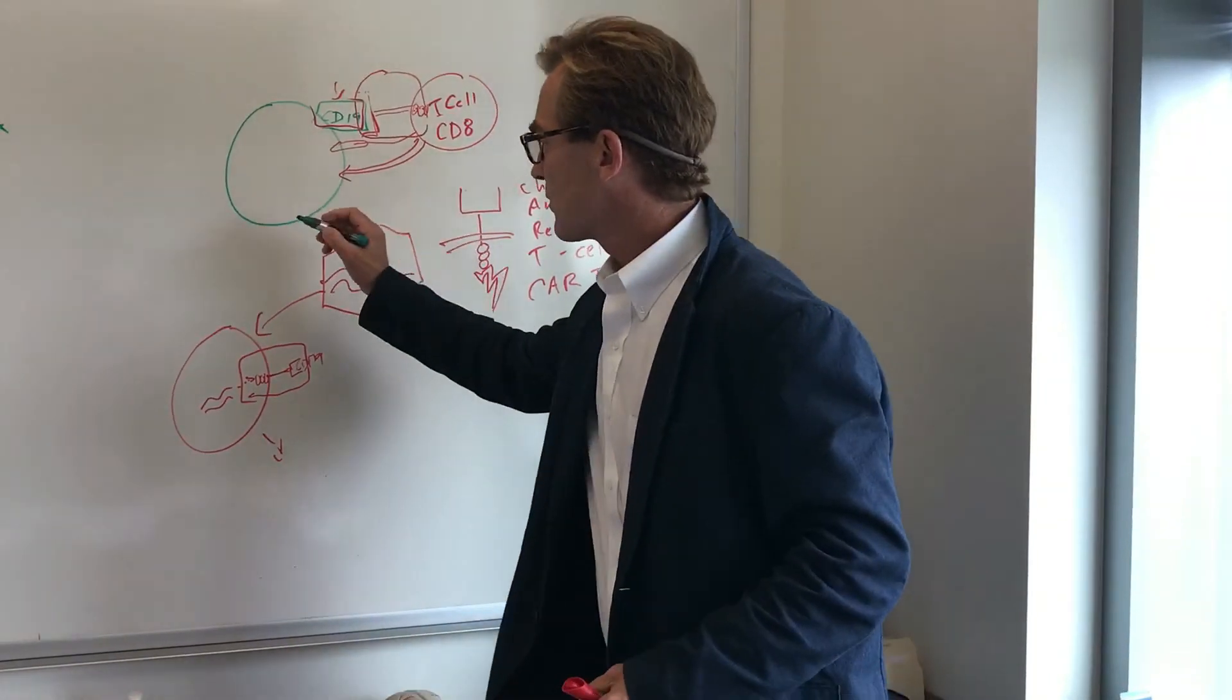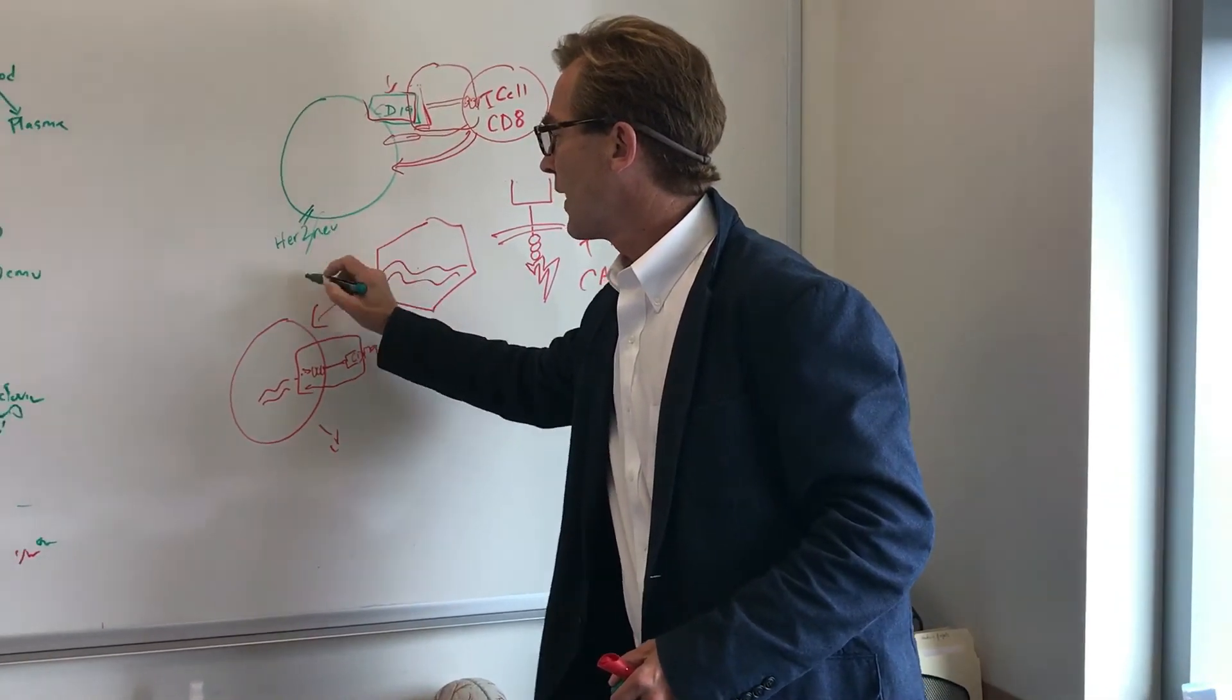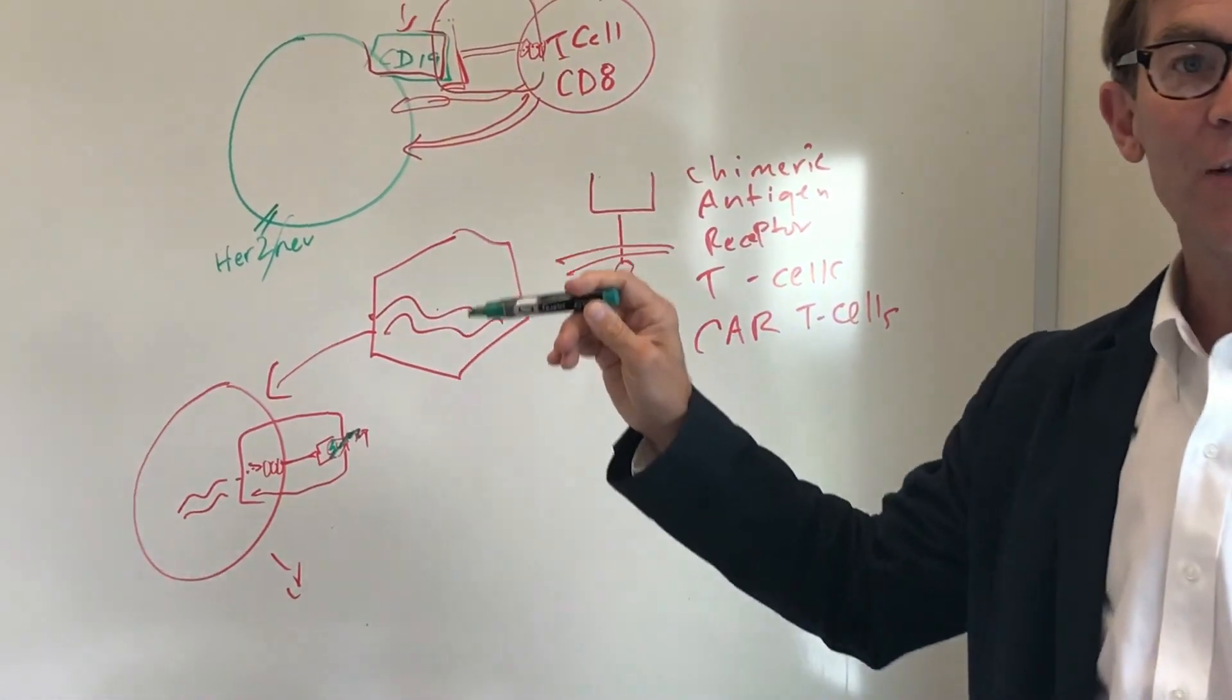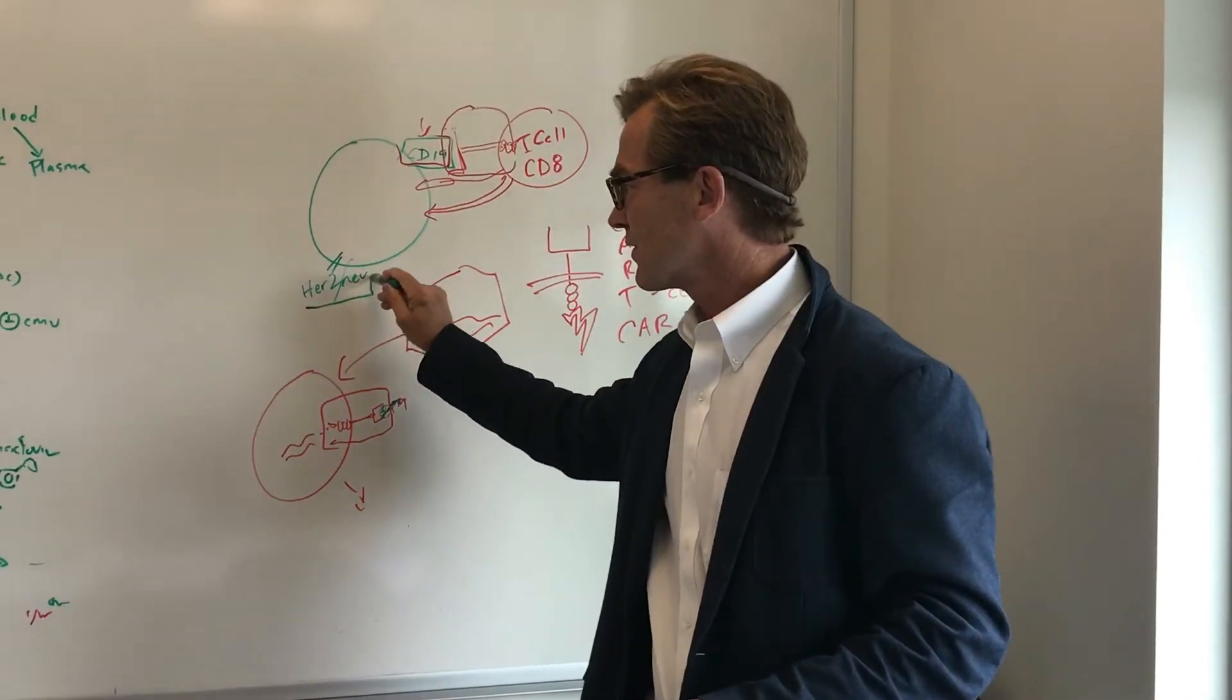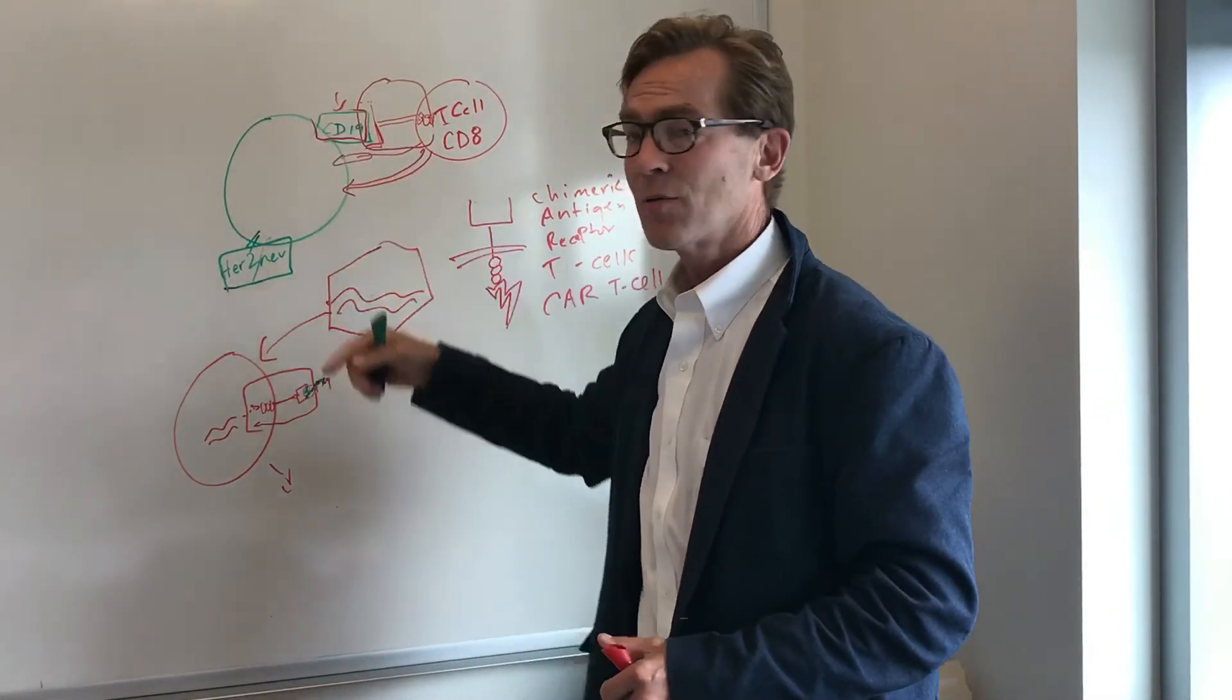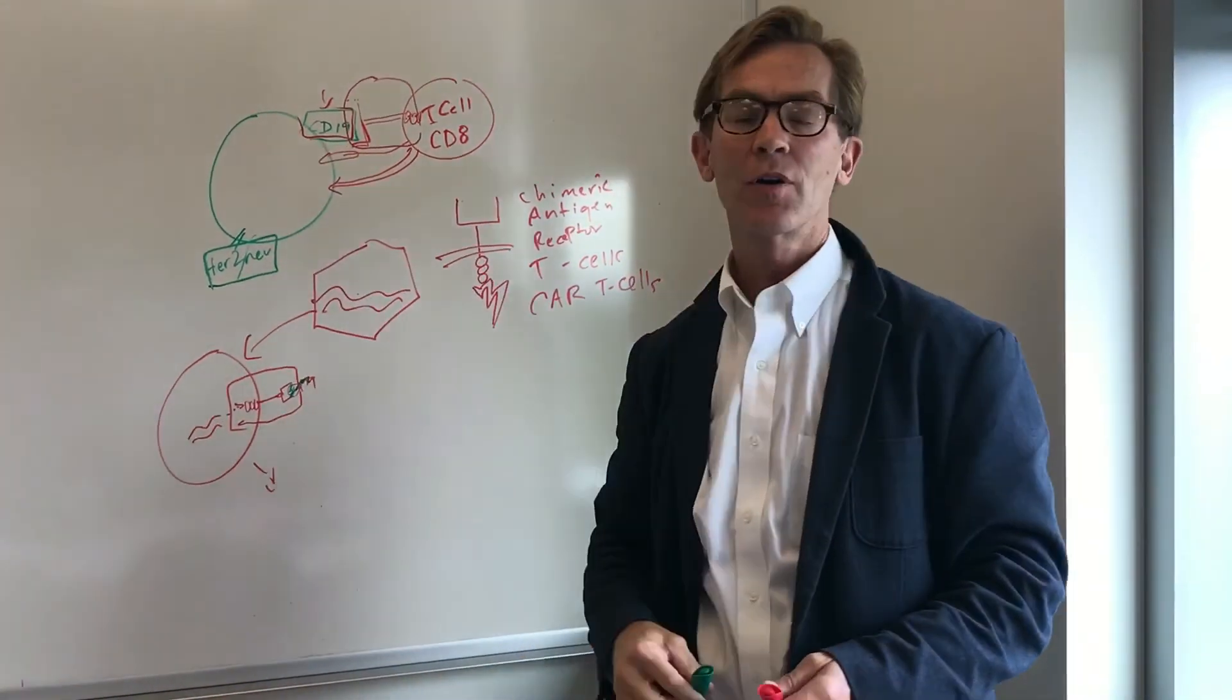Another molecule that's expressed, for instance, on breast cancer cells is called HER2 neu, and they've made CAR T cells that go after HER2 neu. And you know, you can attack breast cancer cells with these. However, some of these, some of the cells in your lungs, for instance, have HER2 neu on them. And some of the patients have horrible pneumonia-type symptoms. And some of the treatments for some of these lymphomas have led to weird things like brain inflammation because they cross-react with anything that might also have that marker on it.